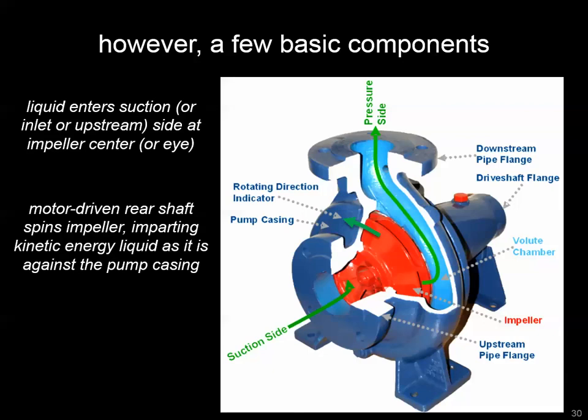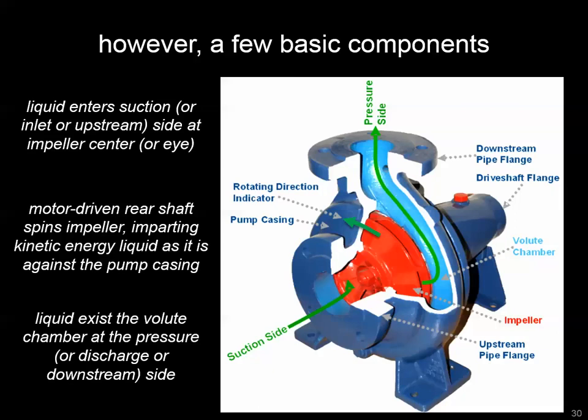An electric motor at the rear of the pump spins the impeller through a drive shaft, flinging the water to the edge of the pump casing — kind of like how kids get flung off a merry-go-round. The liquid is then pressurized and exits on the discharge, or downstream, high-pressure side of the pump. You can determine the suction side by how fluid enters — at the middle of the impeller — while the pressure side is tangential to the pump casing.